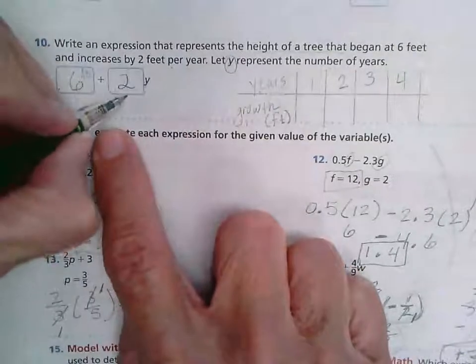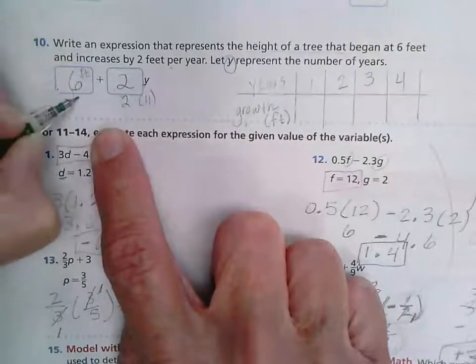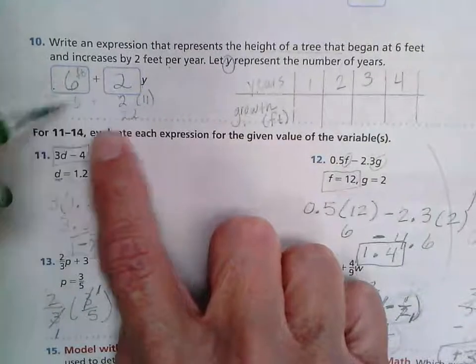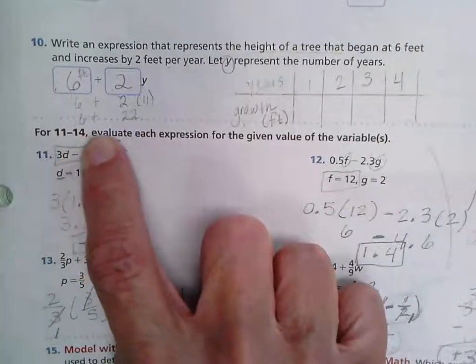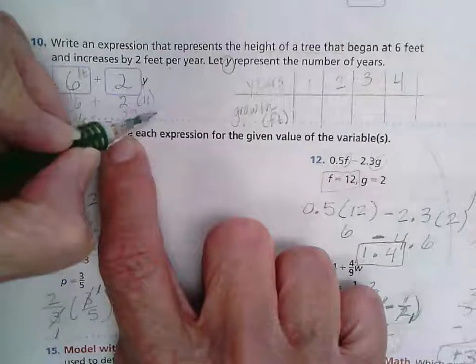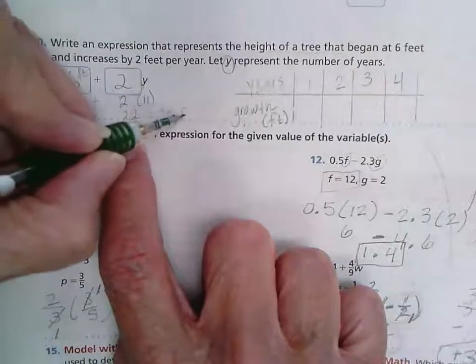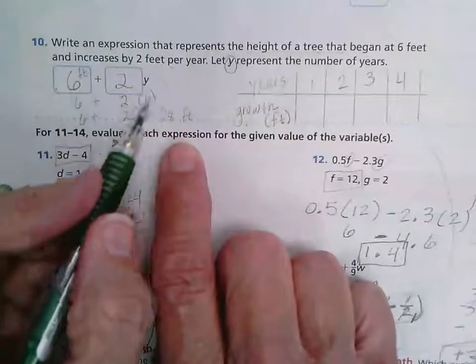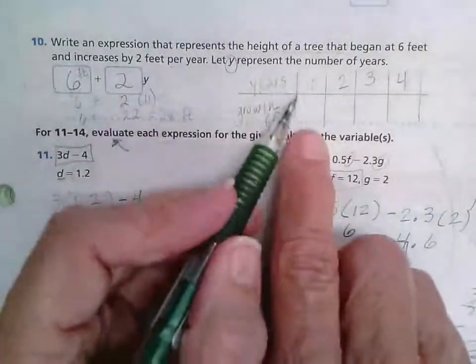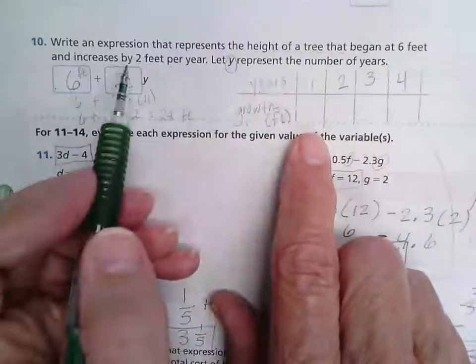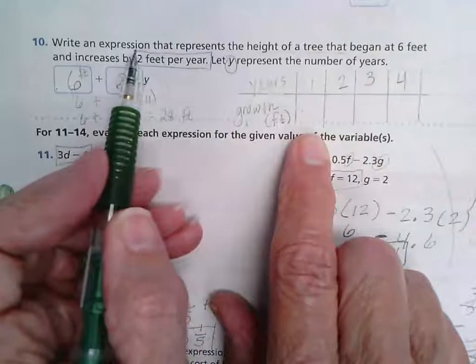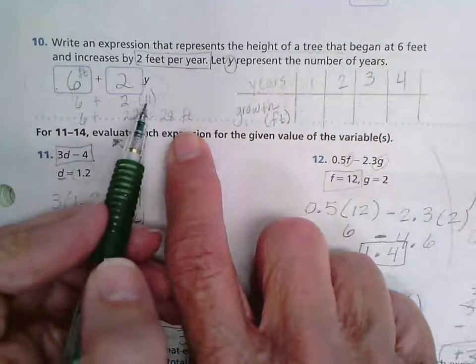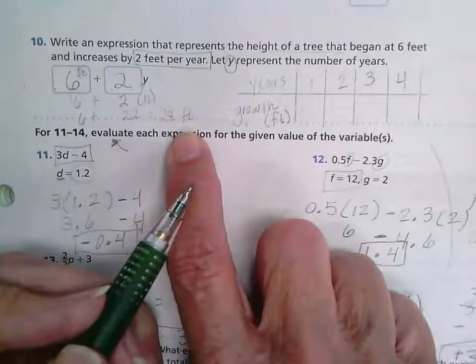Well then we would just take two times eleven and we would add six to it. So this would be twenty two, and six plus twenty two, that would give me twenty eight feet tall. So in eleven years using this expression based on the fact that this tree has constant growth of two feet per year, I could expect that by the time eleven years had passed this tree would have grown twenty eight feet.